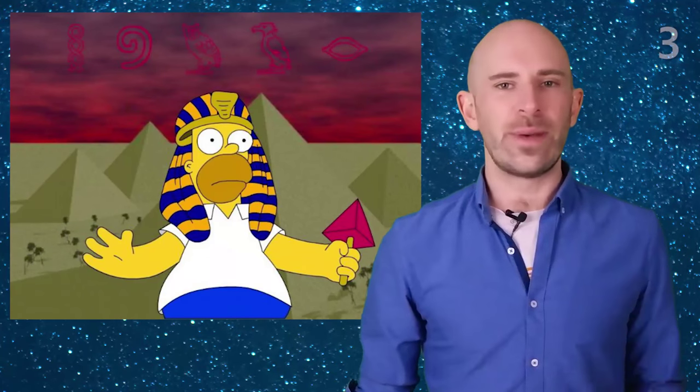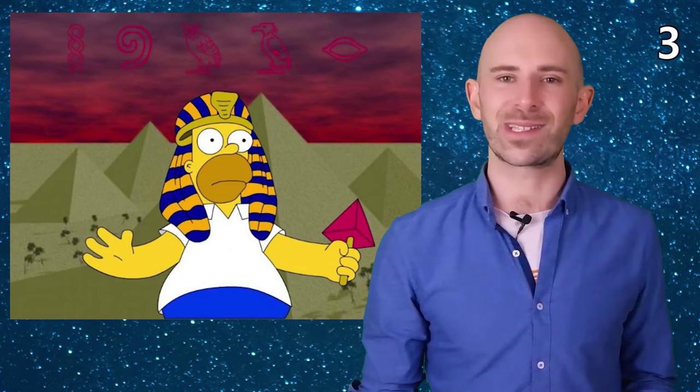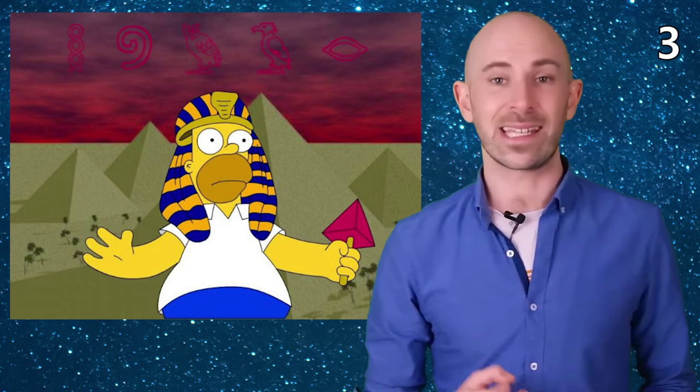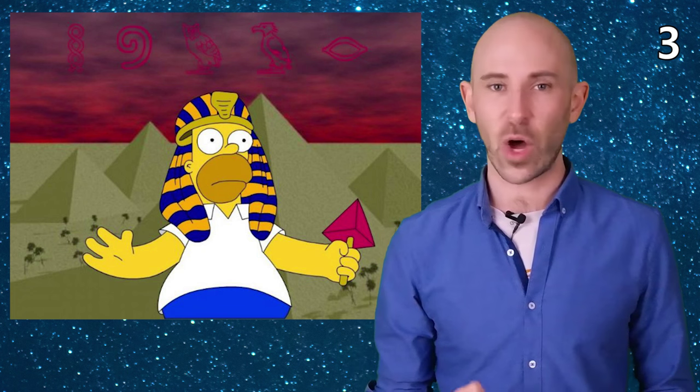Number 3. In the Arabic broadcast of The Simpsons episodes, Homer drinks soda instead of beer and eats Egyptian beef sausages instead of hot dogs.